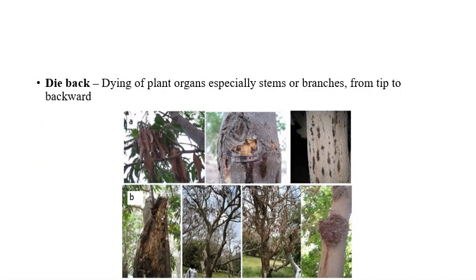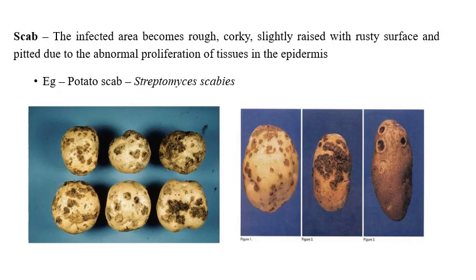The third symptom is dieback, where plant organs — especially stems or branches — die from the tip backward. Here we can observe dieback of mango, dieback of citrus, and dieback of different types of plants. The drying and killing of plant organs is observed, and the dying starts from the tip to backward.